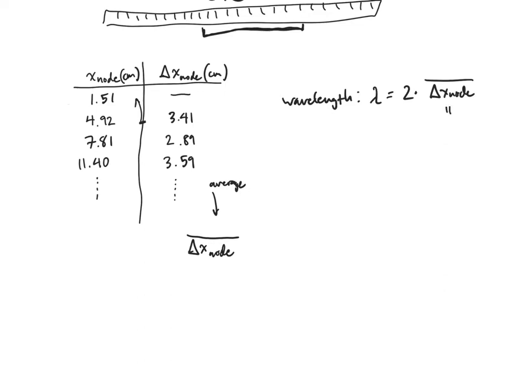Let's say that I computed that average and it turned out to be 3.02 centimeters, the average distance between the nodes. Then I multiply that times two, that means that my wavelength is going to equal 6.04 centimeters.